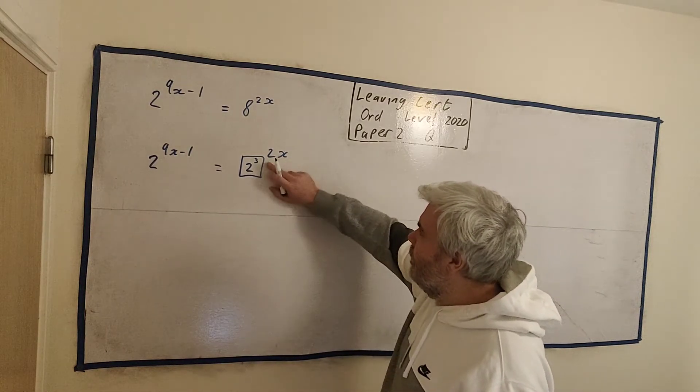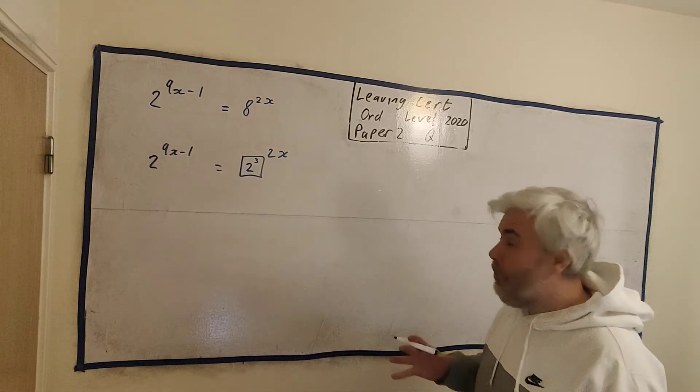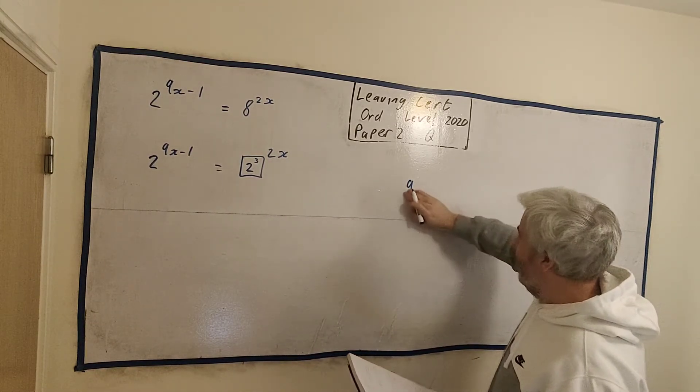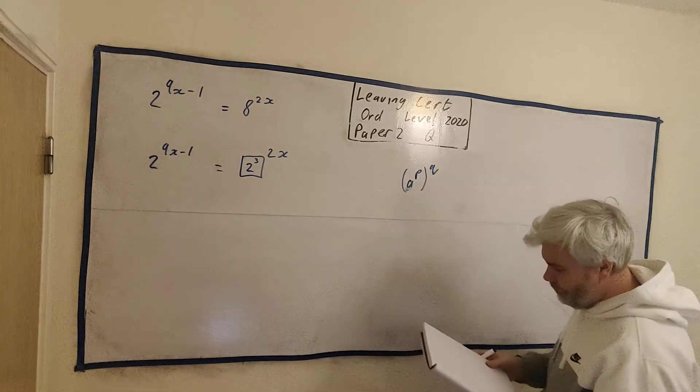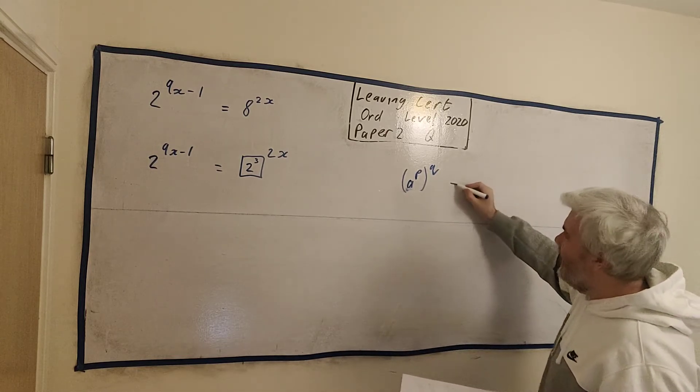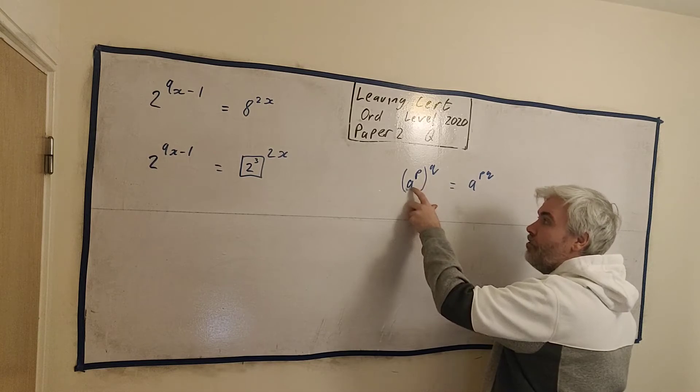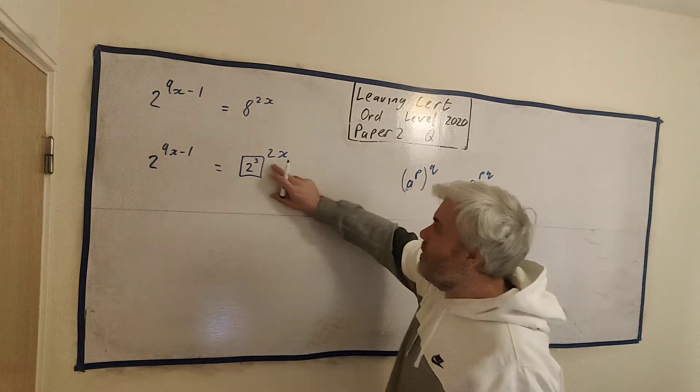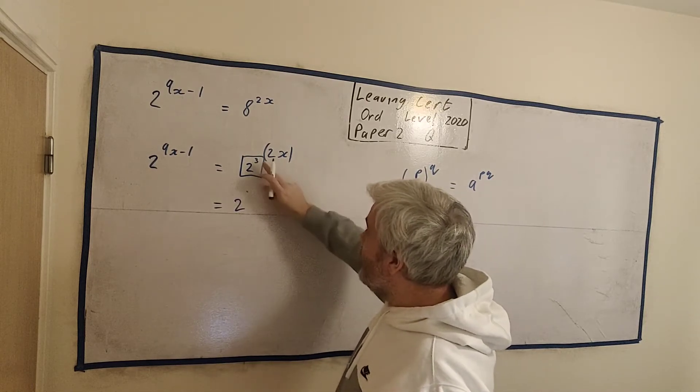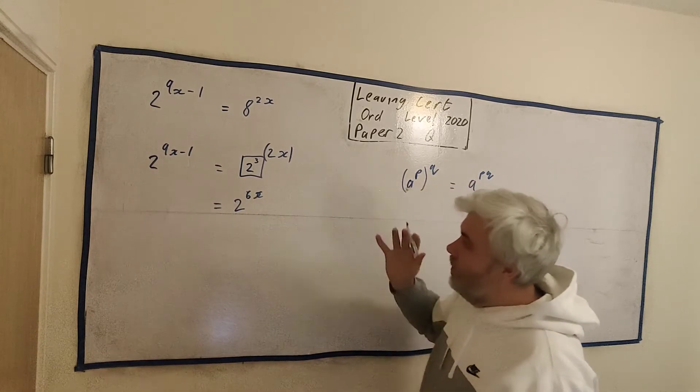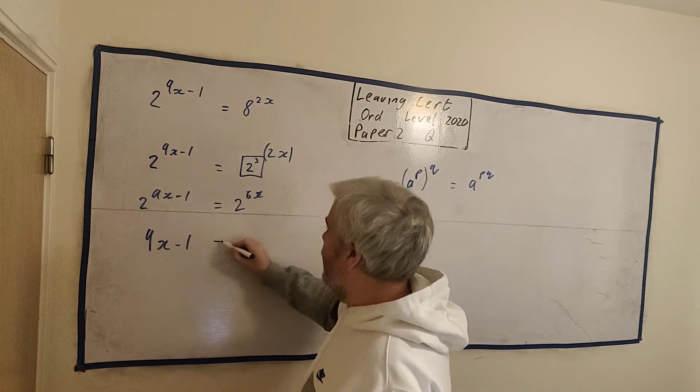So I've really just replaced the 8 with 2 to the power of 3. And the only problem with that is that we still have a little bit of work to do here. In your formula book, you'll have rules about indices. And one of the rules looks like this. It's A to the power of P, which is also to the power of Q. And that is equal to A to the power of PQ. If there's a power of something outside something else that has the power, they just multiply. This is just going to be the same as 2 to the power of 3 multiplied by 2x. That's 6x. Now we can just get rid of these 2s. We can just say 9x minus 1 is equal to 6x.